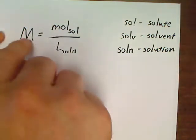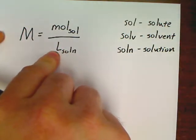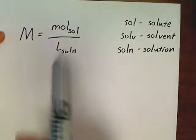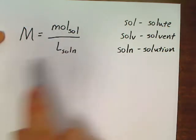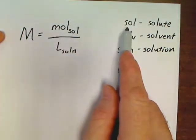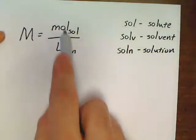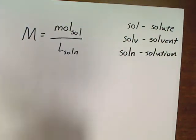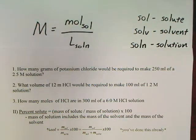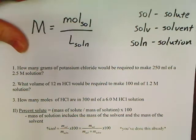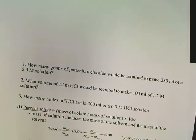Your volumes have to be written in liters when using this formula. There are really only two common problem types: they give you big M and liters and ask you to find moles, then convert to grams; or they give you grams, you convert to moles, then divide to get big M. Let's go ahead and do some of those problems — here's number one from the homework.